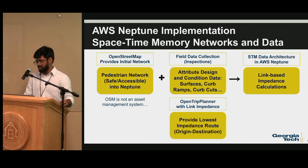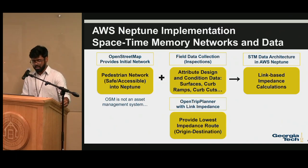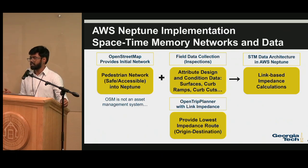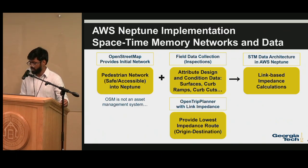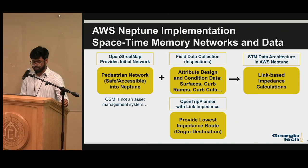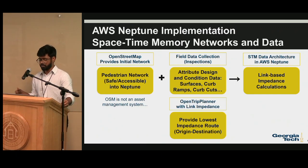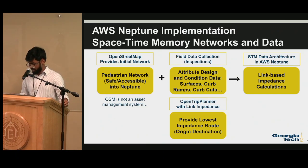To create this pedestrian network, we felt OpenStreetMap was a great opportunity. We use field data collection to collect the conditions of ramps and surface quality. In our research lab we developed something called the STM — the Space-Time Memory network — which factors in both the spatial and temporal characteristics of the network, and finally we use OpenTripPlanner to create the navigation application.